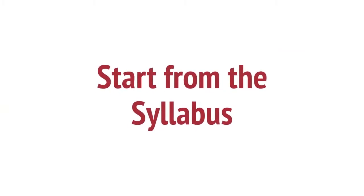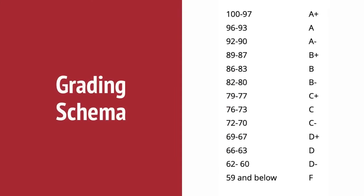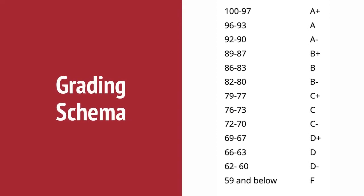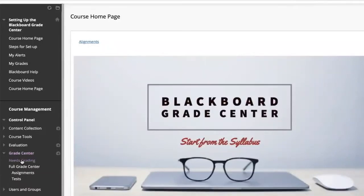Now that we've reviewed the basics, let's start from the syllabus to build your Grade Center. Start with the grading schema. A grading schema is a mapping of percentage ranges to a specific grade display. We need to make sure the Blackboard schema matches your syllabus. Navigate to the Full Grade Center by clicking Grade Center, then Full Grade Center.